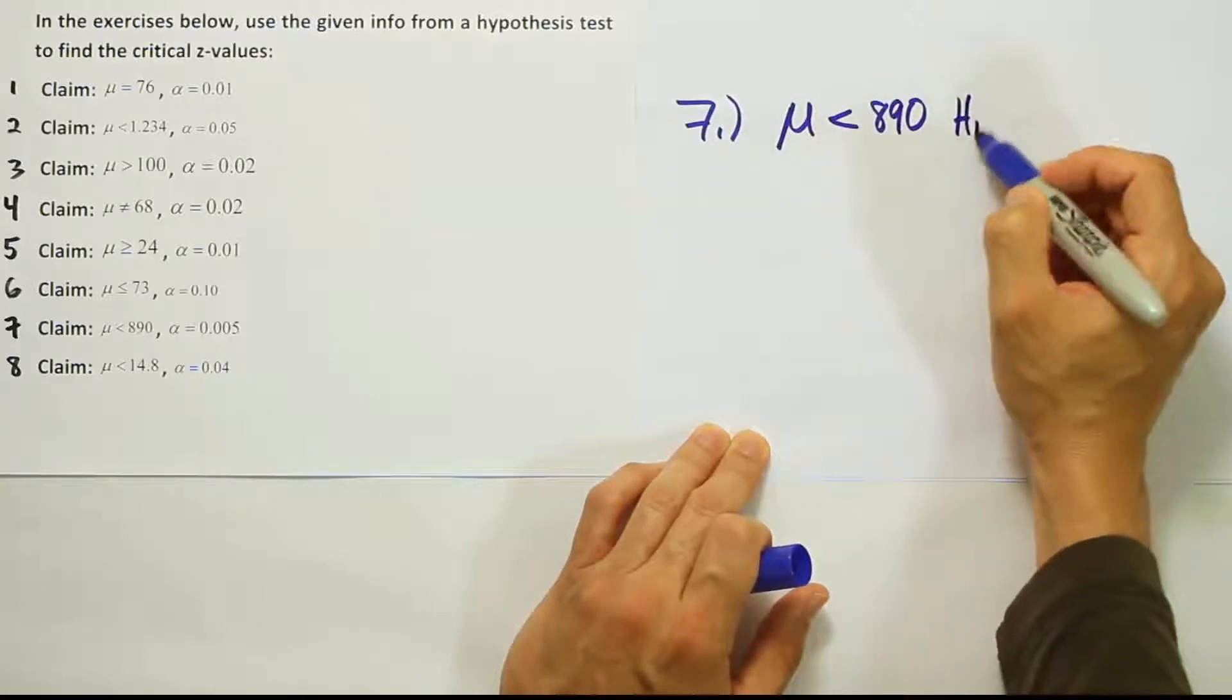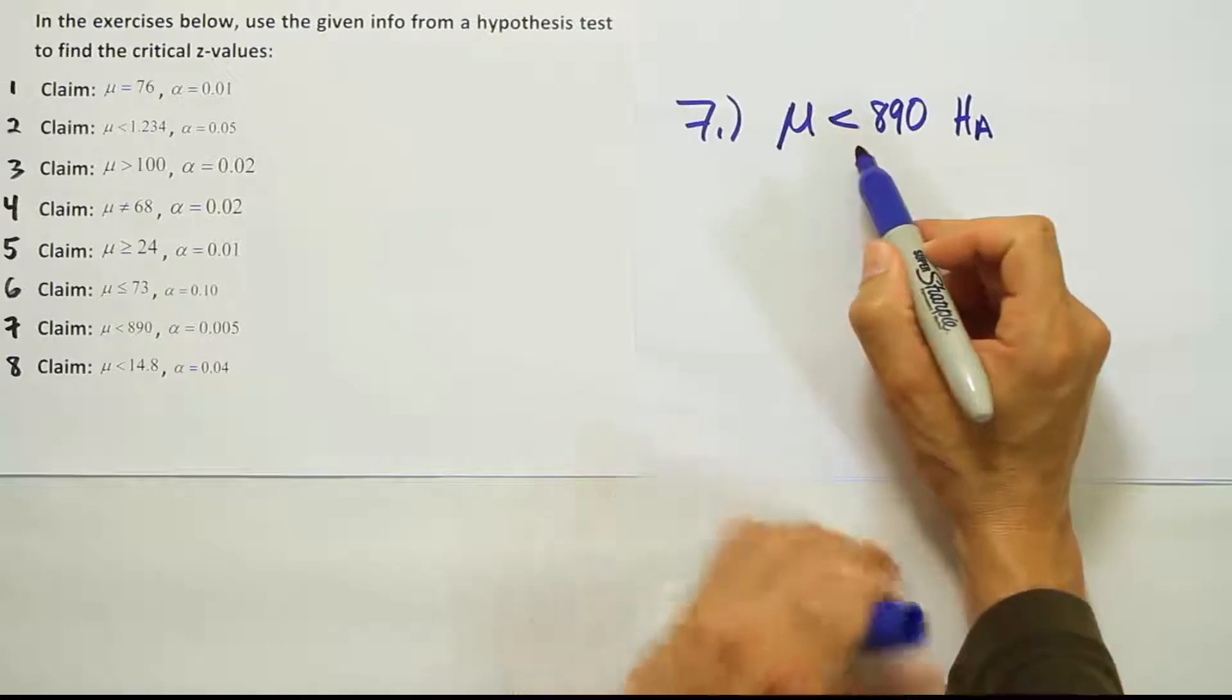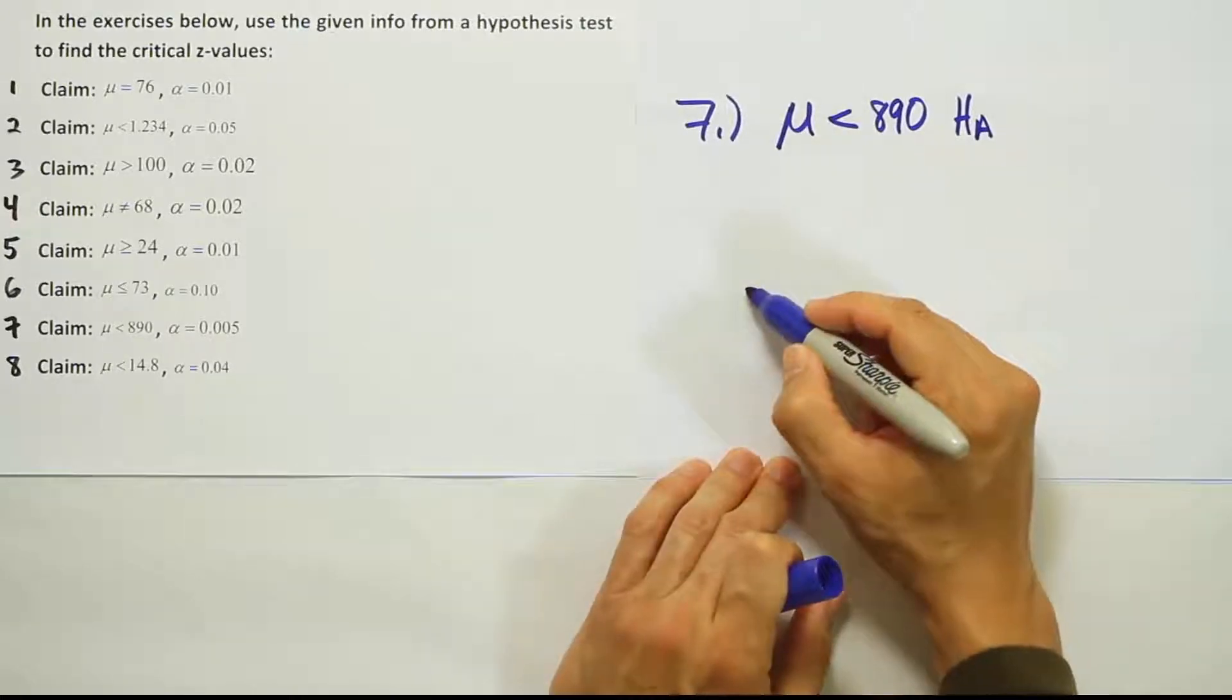This would make it HA. The claim and HA are the same here because we have the less than symbol. That will make it a left tail test.